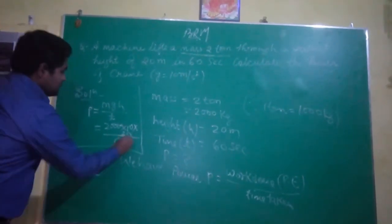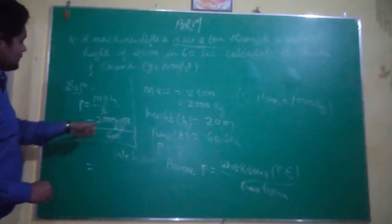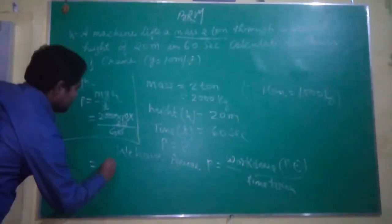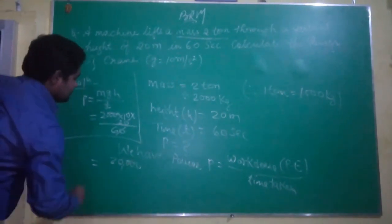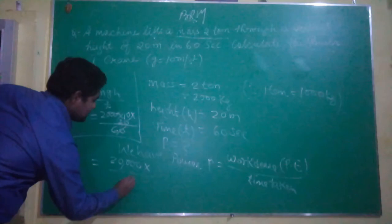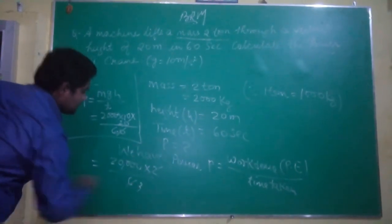Calculating: 20 and 60 cancel to give 2 upon 6. G of 10 cancels with 10. 2000 times 10 gives 20,000, times 2 upon 6.